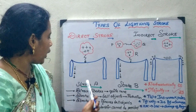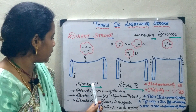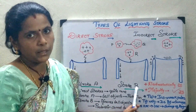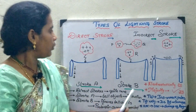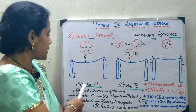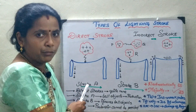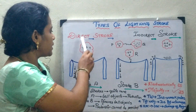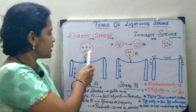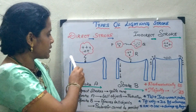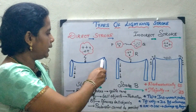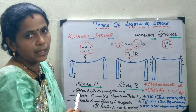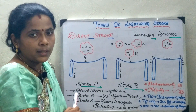In this direct stroke you have two types: one is stroke A and another is stroke B. Now we will analyze stroke A. Here I have considered a positively charged cloud and a tall tower with insulators and a transmission line.